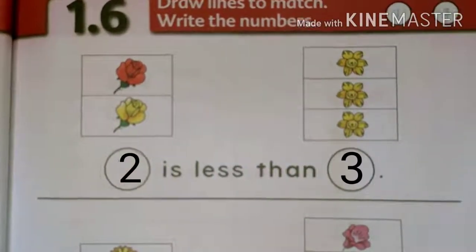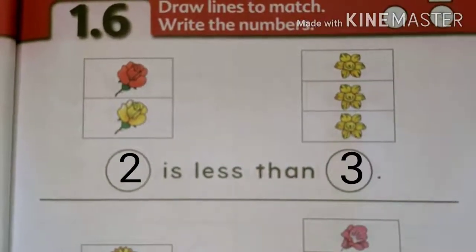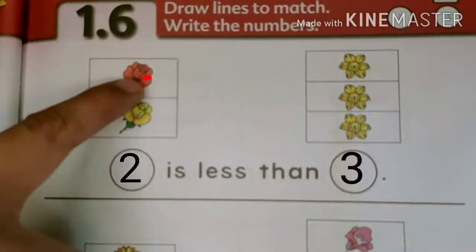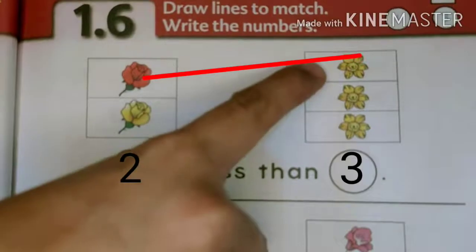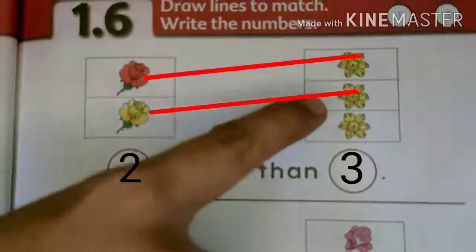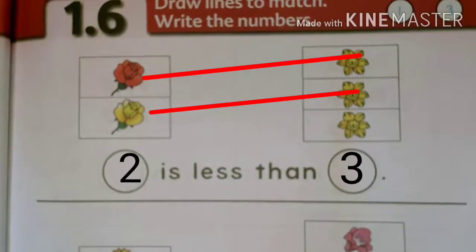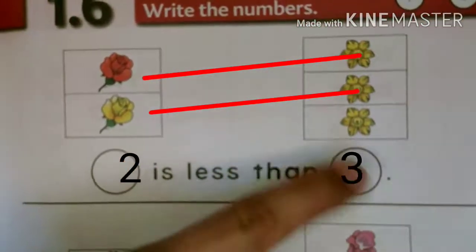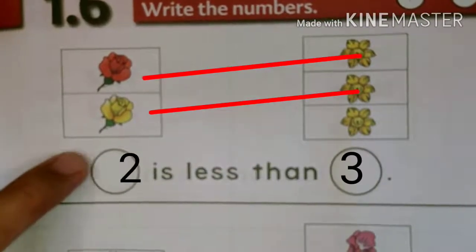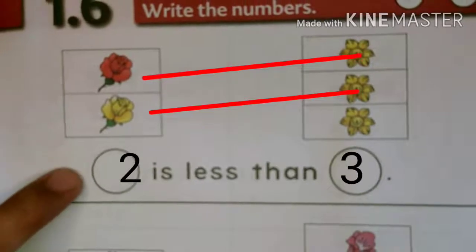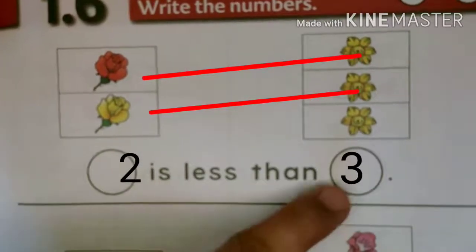Now, let's try to compare these flowers by drawing a line. One flower has no pair. This means that this set is less than this set. Or, two is less than three.